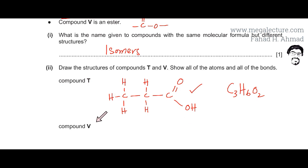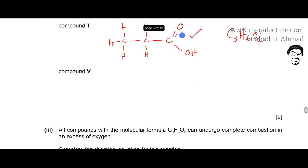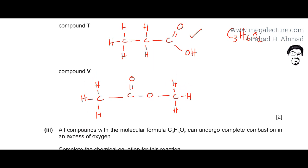Let's draw the structure of compound V, which is an ester. When drawing an ester, there is a C double bond O and O, with carbon chains on both sides of this ester link. There are 3 hydrogens on each side carbon atom, making 6 hydrogens total, 3 carbons, and 2 oxygens. So compound V is confirmed as an ester with this ester link.